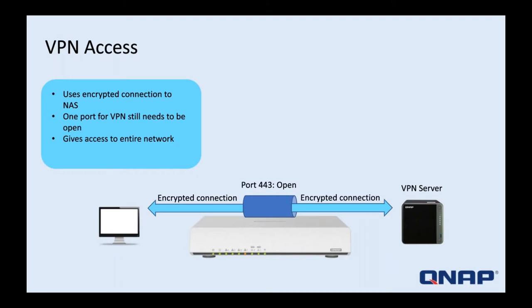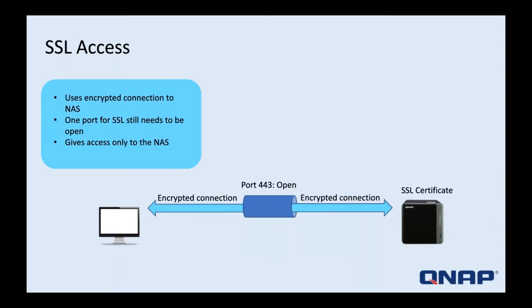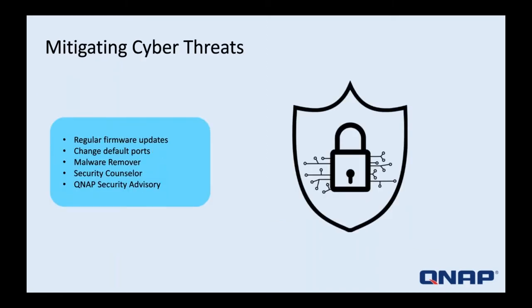One way to access the NAS directly with high security is via a VPN connection. You set up the NAS as a VPN server, open one port for VPN, and all traffic is encrypted. Another option is an SSL connection — you open a port for access, the connection is encrypted, but you'll need to purchase an SSL certificate. The security advantage of SSL over VPN is that if a VPN connection were hacked, the attacker would have access to the entire network, whereas with SSL they'd only have access to the NAS.